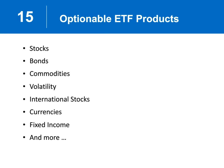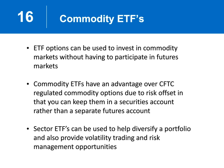The ETF products that list options include stocks, bonds, commodities, volatility, international stocks, currencies, and fixed income. With regards to the commodity ETFs, options on these can be used in lots of different commodity markets. One of the benefits is that ETFs have an advantage over CFTC-regulated commodity options because you can keep them in a securities account rather than a full futures account. Also, the sector ETFs can be used to diversify a portfolio.